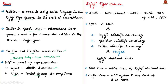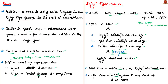Regarding Rajaji Tiger Reserve: it is located in the state of Uttarakhand. The area was notified as a Tiger Reserve in 2015 by the state government of Uttarakhand after recommendation by the National Tiger Conservation Authority, in accordance with Section 38V of the Wildlife Protection Act of 1972. In 1983, three wildlife sanctuaries — Rajaji Wildlife Sanctuary, Motichur Wildlife Sanctuary and Chilla Wildlife Sanctuary — were merged and declared as Rajaji National Park. The core area of Rajaji Tiger Reserve covers the entire Rajaji National Park and has a buffer zone to the east to the tune of 255 square kilometers.